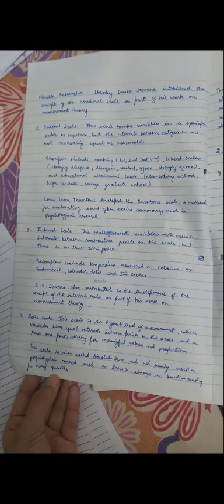Ratio scale ka yehi fayda hai - for meaningful ratios and proportions. This scale is highest level of measurement where variables have equal intervals between two points on the scale and a true zero point allowing for meaningful ratios and proportions. This scale is also called absolute zero and not really is used in psychological research much.